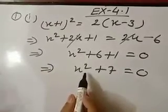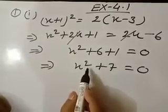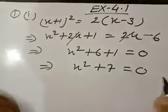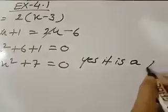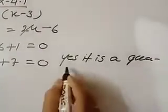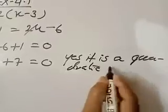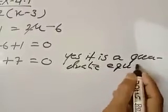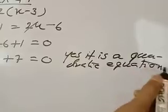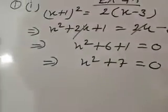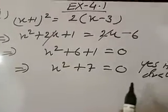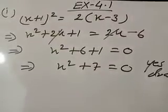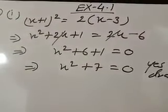The highest power of the variable is 2, so it is a quadratic equation. You will write: yes, it is a quadratic equation. Or you can also write: the given equation is quadratic. Similarly, for each point we check — if the highest power is 2, we write yes, it is a quadratic equation. If the highest power is not 2 — for example 1, 3, 4, or something else — then we write: no, it is not a quadratic equation.